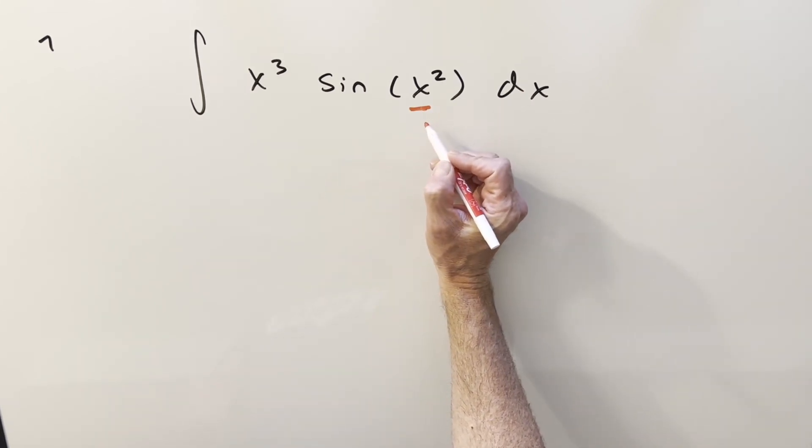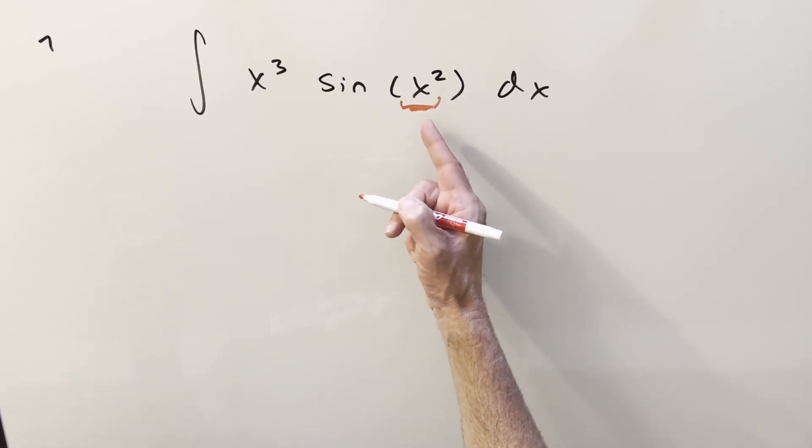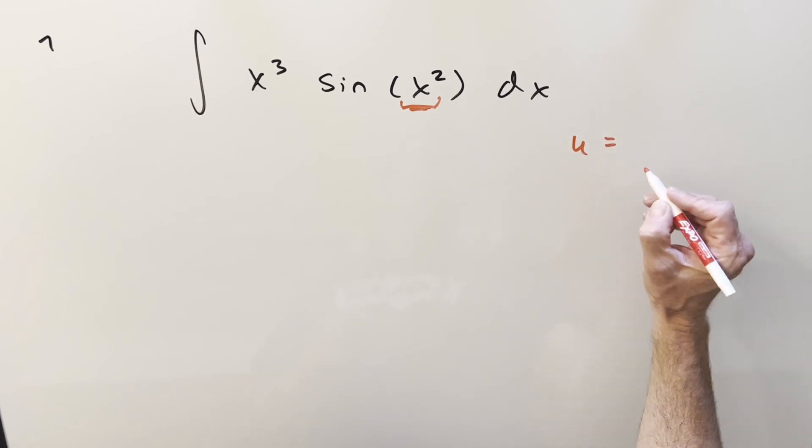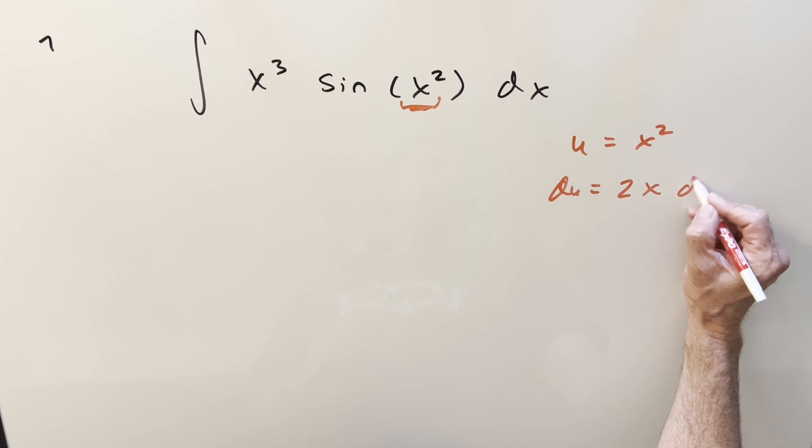Actually, I don't even know if integration by parts would work right away. So what I had in mind was the u-substitution to clean that up, because I don't really know how to deal with sine x squared. So we'll do u equal to x squared, and then we'll do du equal to 2x dx.